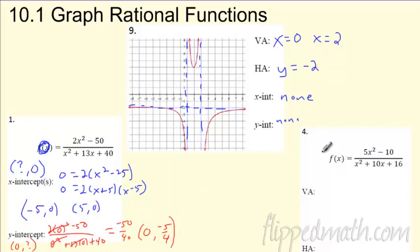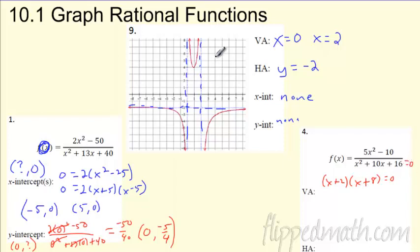To find vertical asymptotes, set the denominator equal to zero — you can't divide by zero, so that's where it's undefined and causes the break in your graph. The denominator factors to x plus two times x plus eight. Setting each factor equal to zero gives vertical asymptotes at x equals negative two and x equals negative eight.